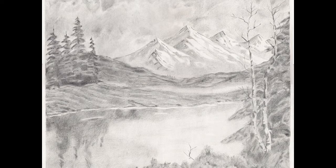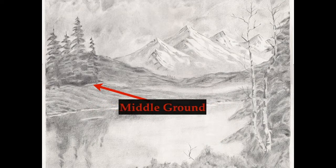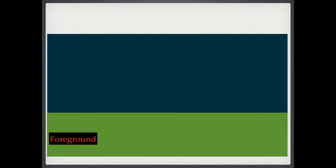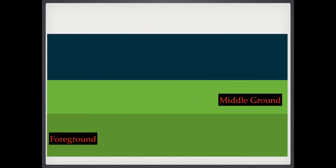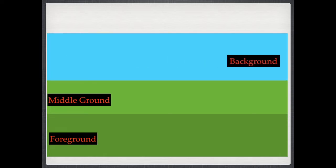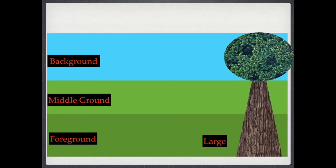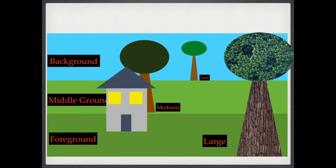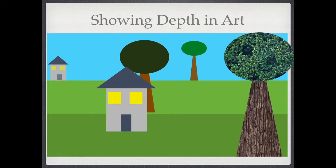This is a landscape — a drawing or painting of the land. We see this tree is in the foreground, these trees are in the middle ground, and the mountains are in the background. Let's combine these together to create a painting with depth: the bottom is the foreground, the middle is the middle ground, and the top is the background. Anything in the foreground should be big, a little smaller in the middle ground, and very small in the background. We can also create depth by overlapping — when one object covers part of another.